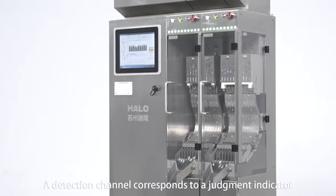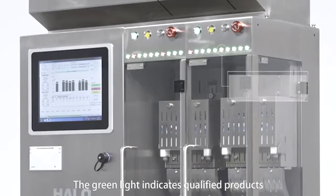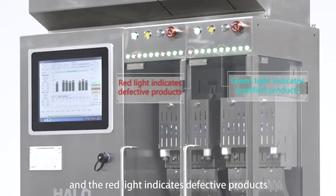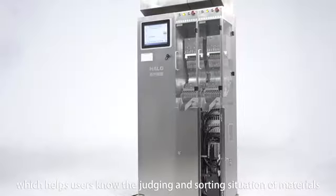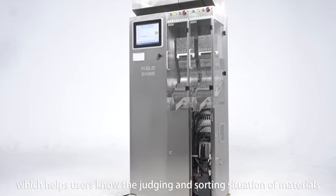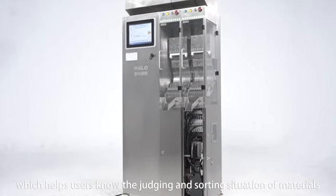A detection channel corresponds to a judgment indicator. The green light indicates qualified products and the red light indicates defective products, which helps users know the judging and sorting situation of materials.